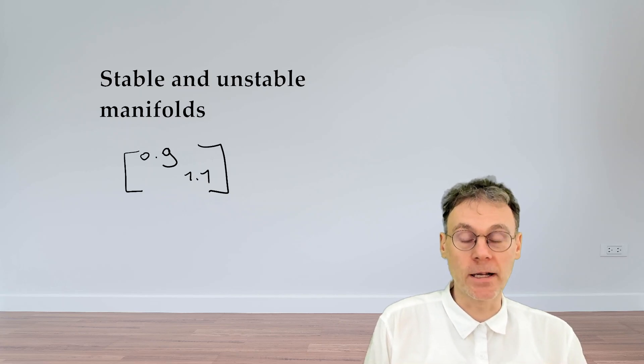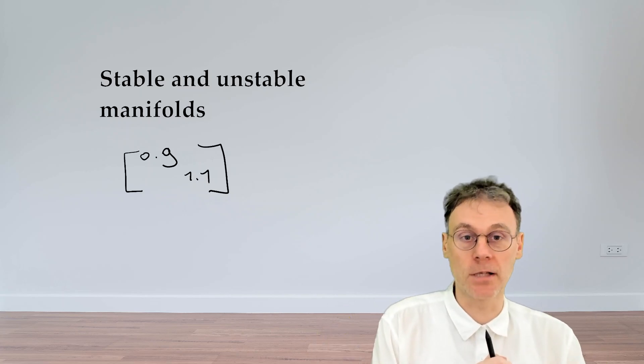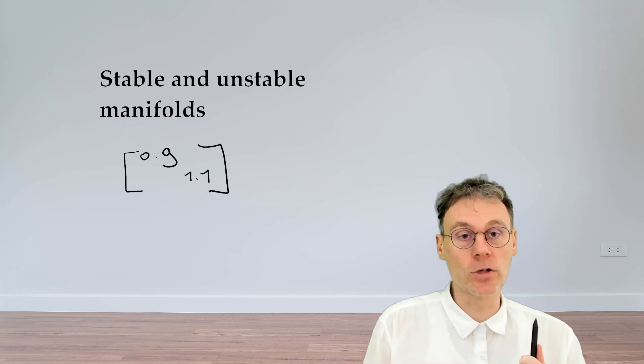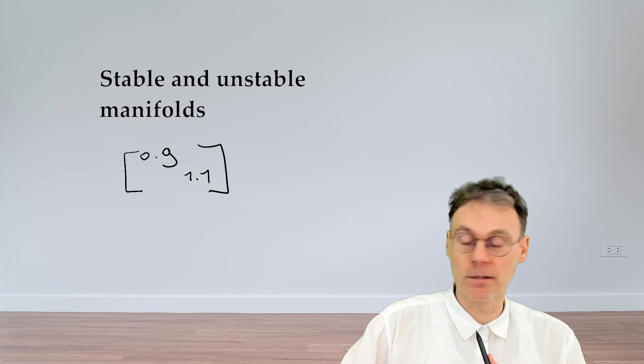Question is can you identify the set of points that the map will eventually map towards the saddle point which is the origin in the case of this linear map. So pause the video and see if you can find a set of points that will end up at the origin.